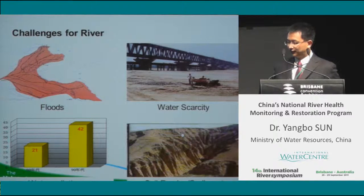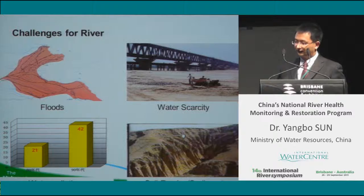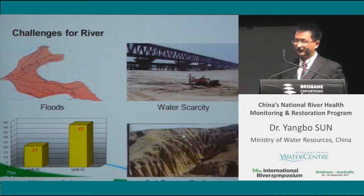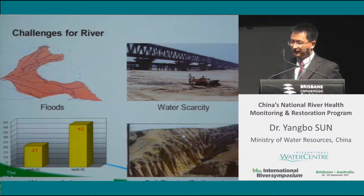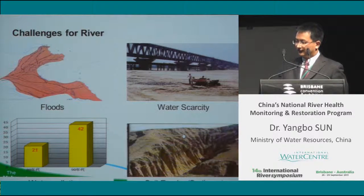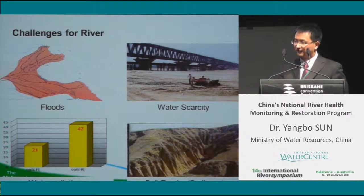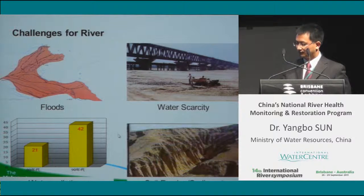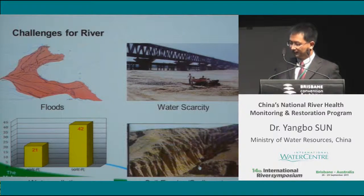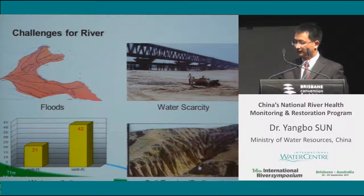These are the most prominent challenges for Chinese rivers. First, floods — for the Yellow River, about 100 million people live in the flood-prone area, and flood disasters have happened frequently throughout history. Second is water scarcity, as water demand has increased significantly with economic growth. Third, water pollution has also become a significant challenge. And last but not least is soil erosion, especially for the Yellow River, which increases flood risk and heightens the riverbed.